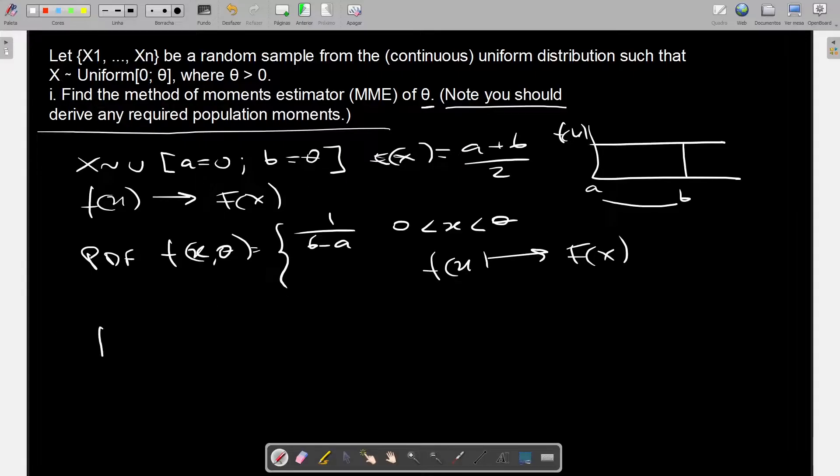we're going to integrate it, and notice some particularities here. So this is between 0 and theta, and the expression that you have is 1 divided by b minus a. b is theta, a equals 0. So this is essentially 1 over theta.